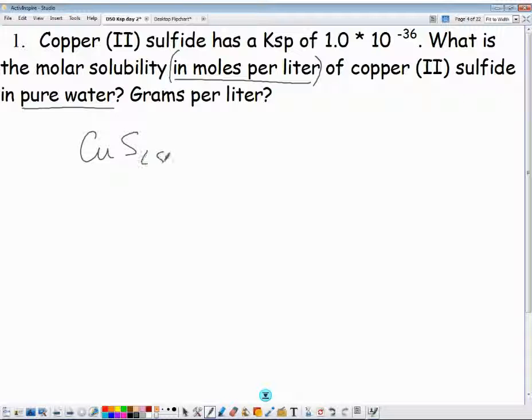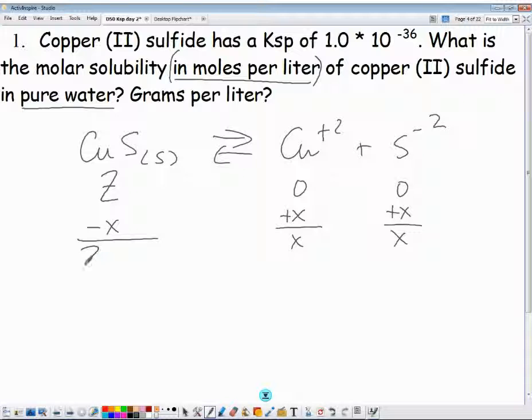Copper(II) sulfide, CuS solid, in equilibrium with Cu+2 and S-2. Pure water means zero ions floating around. If it's pure water, it's considered deionized water, so we have no ions floating around. Now I did notice on the OWL, instead of using a Z, they used the word sum. And when they do their minus X plus X plus X, instead of saying Z minus X, they say sum minus X is really just sum. So that's the same thing as me saying Z minus X is about Z.